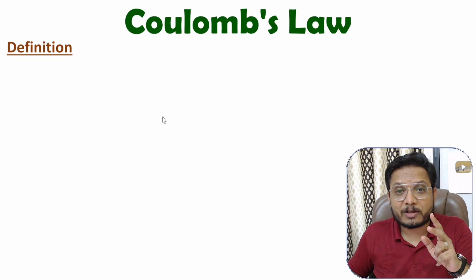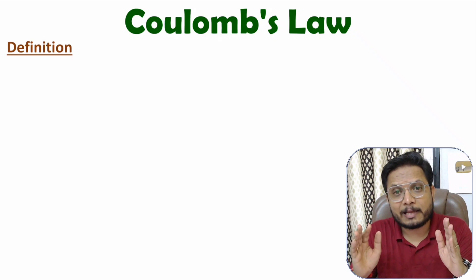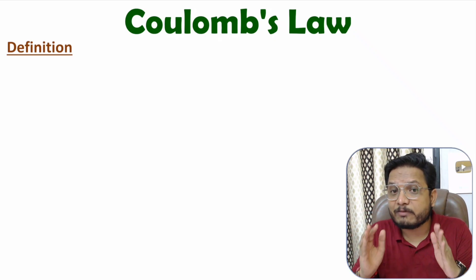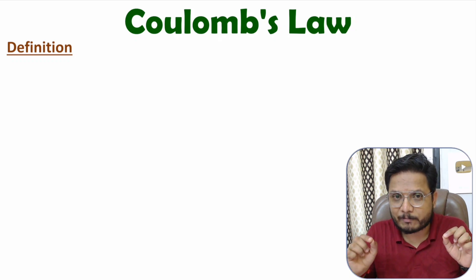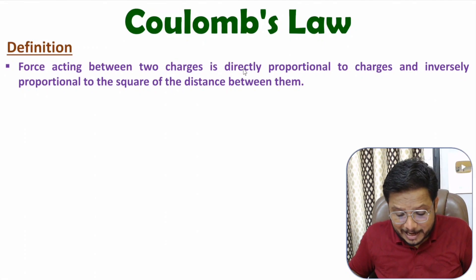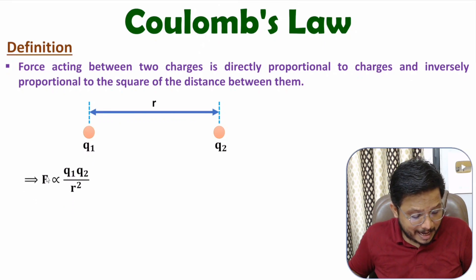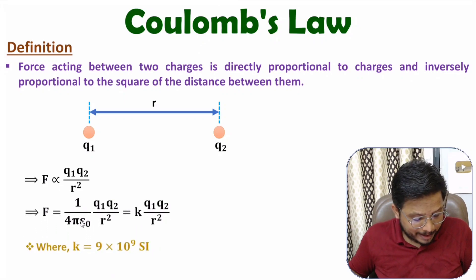The definition of Coulomb's law: the force acting between two point charges is directly proportional to those two charges and inversely proportional to the square of the distance between them. So force is directly proportional to q1 and q2, and inversely proportional to r squared. The proportionality constant is 1 over 4π ε₀.